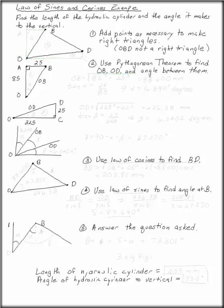Find the length of the hydraulic cylinder and the angle it makes to the vertical. The first thing we want to notice is that OBD is not a right triangle, so we are going to add points to our diagram as necessary to make some right triangles.